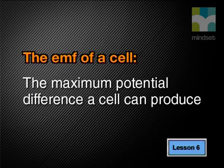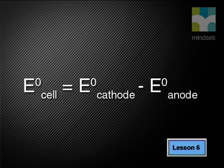To complete our investigation of the magnesium-zinc cell, we need to find the maximum potential difference this standard cell can produce — we call this the EMF of the cell. We can use the E° values of the individual half cells to calculate the E° of the cell, which is the same as the EMF. The equation is: E° cell = E° cathode − E° anode.